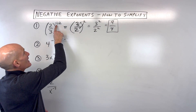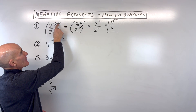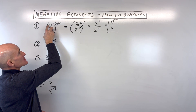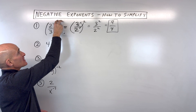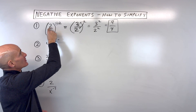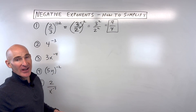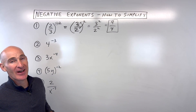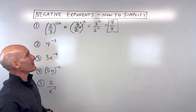Just remember, when you see that negative exponent, look at the base. Remember, you've got the exponent — the base is what the quantity is raised to. You've got the bottom value raised to that negative exponent. You take the reciprocal.